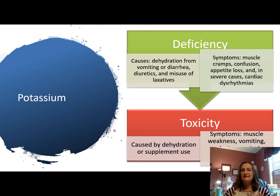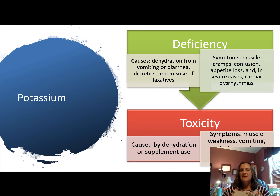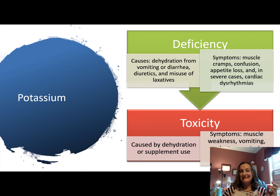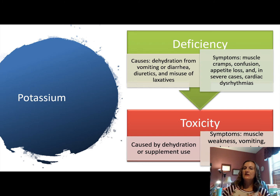Potassium deficiency and toxicity have very similar symptoms. Toxicity is also caused by dehydration, but primarily nurses and dietitians will see patients abusing supplements — taking too many potassium-high supplements. Symptoms include muscle weakness and vomiting. At excessively high blood levels, it could lead to cardiac arrest. The key distinction: cardiac arrhythmias in deficiency, cardiac arrest in toxicity.